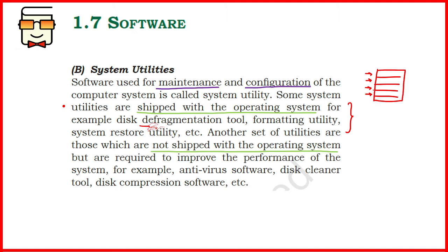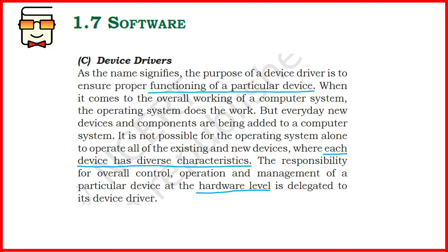Sometimes you need to format the system, restore it to a particular version, or maintain its backup. Softwares that maintain configurations, boost performance, and allow the computer to function at its best are referred to as system utilities. Some utilities not generally shipped with the operating system include antivirus software, disk cleaners that free up memory space, and disk compression software.